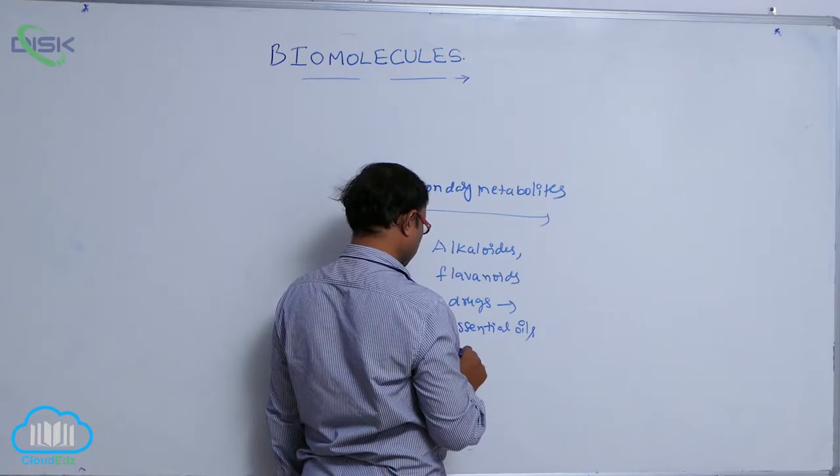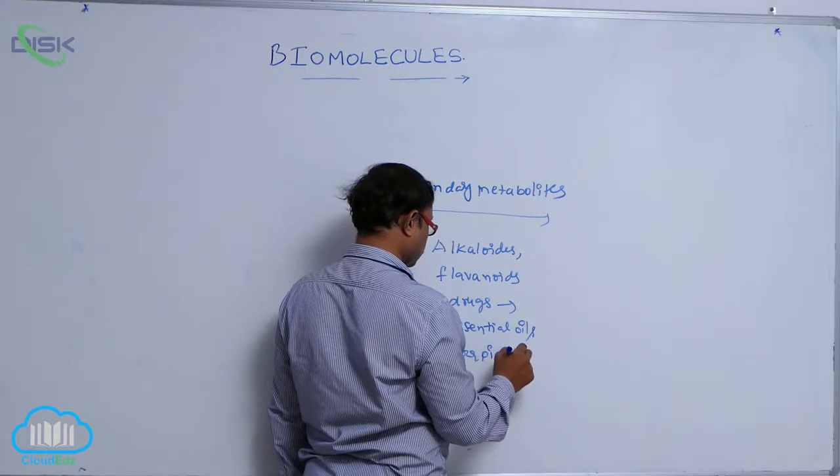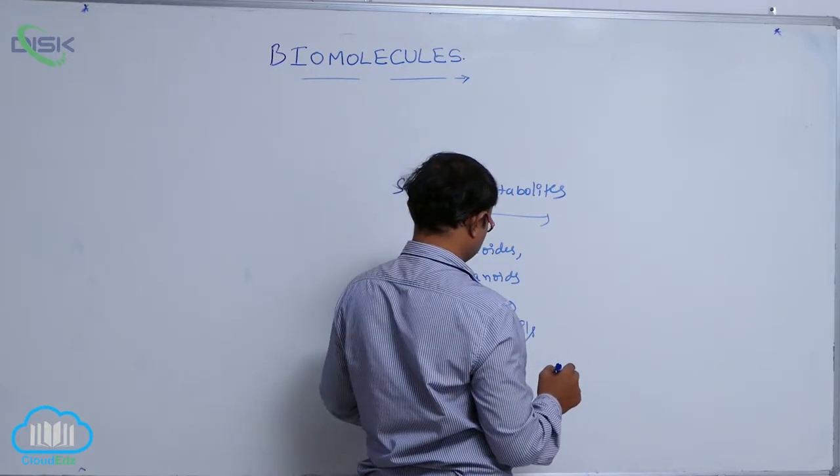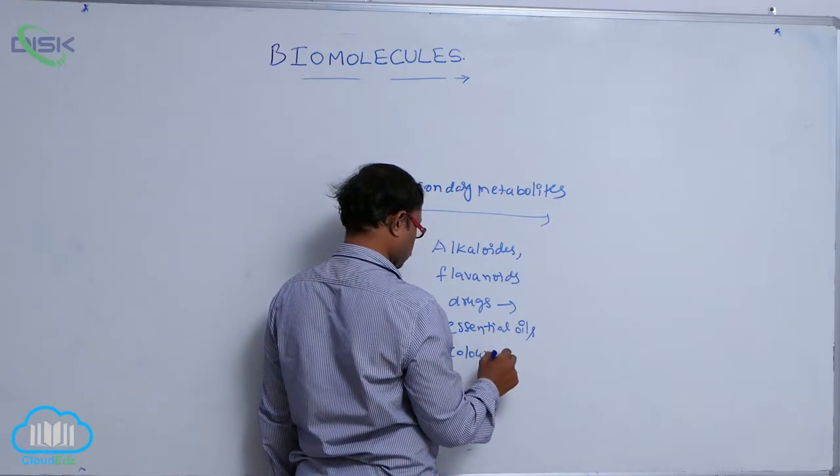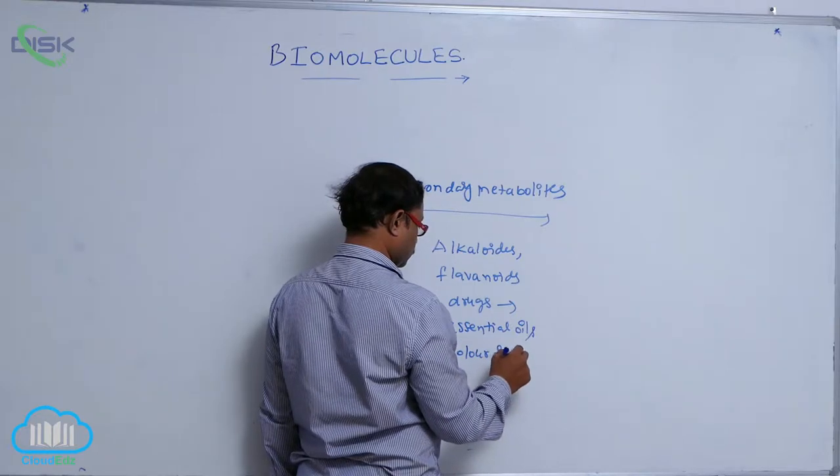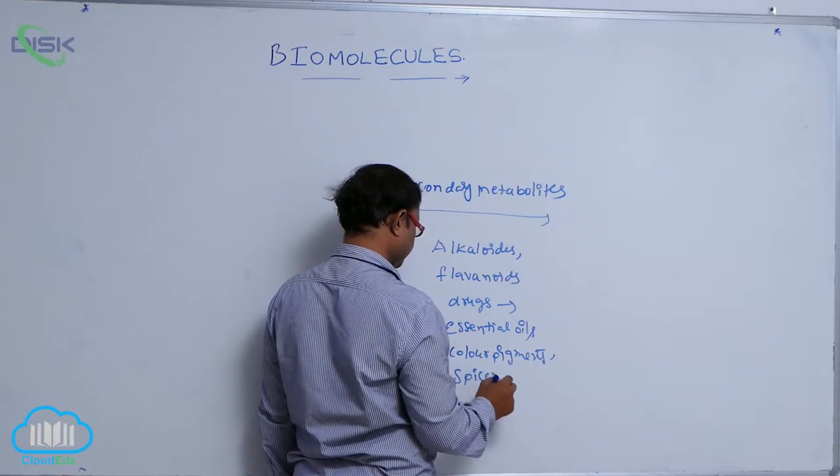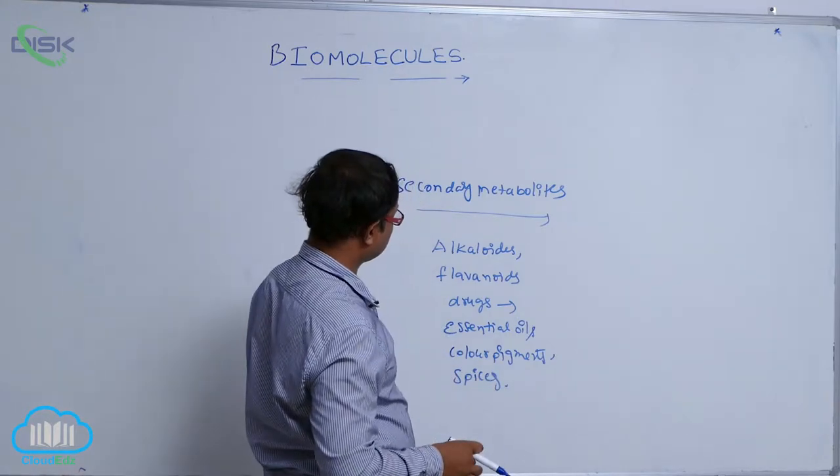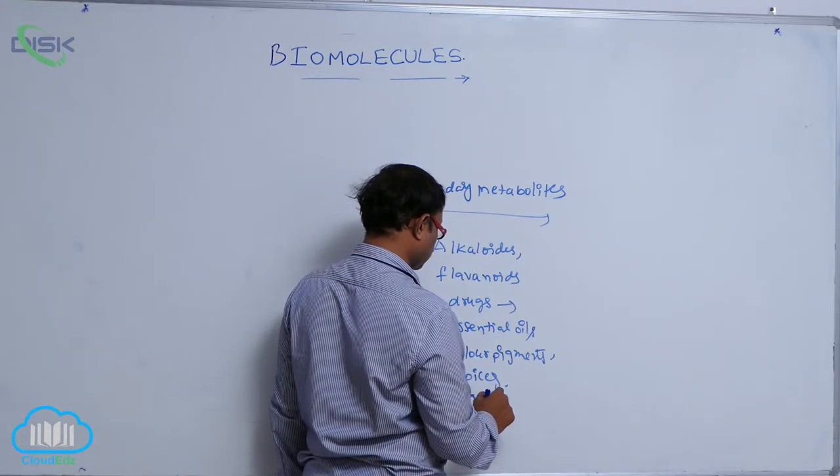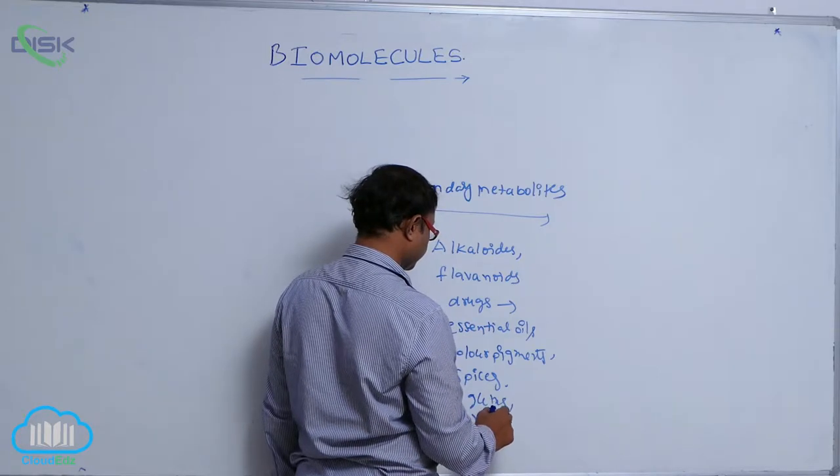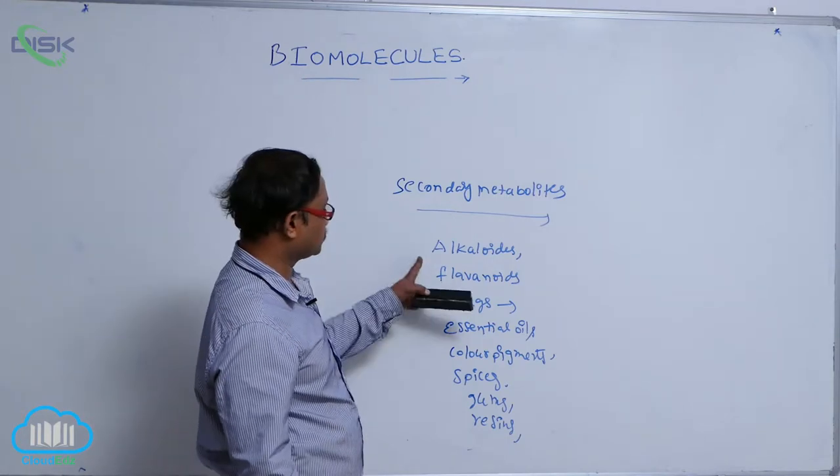Color pigments, Spices, Gum, Resins. So these are some secondary metabolites: Alkalides, Flavonoids